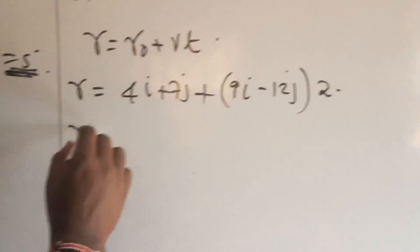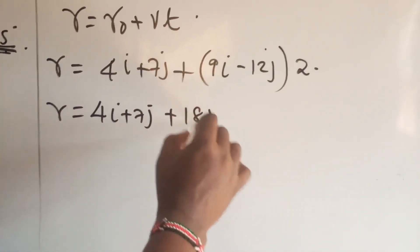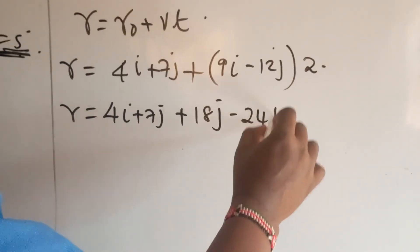Because the question is talking about after 2 seconds. After 2 seconds, so r becomes 4i plus 7j plus 18i minus 24j.